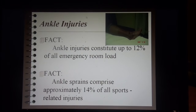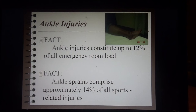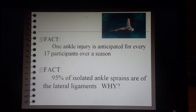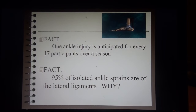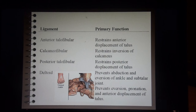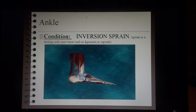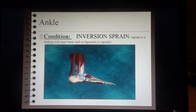Ankle injuries constitute up to 12% of all emergency room load. Ankle sprains compromise approximately 14% of all sport-related injuries — quite high. Ankle injuries are very common and can take place at any time. One ankle injury is anticipated for every 17 participants over a season. And 95% of isolated ankle sprains are of the lateral ligaments — those outside ligaments.